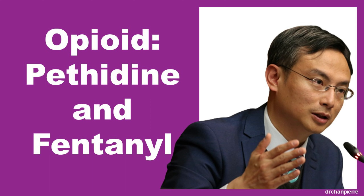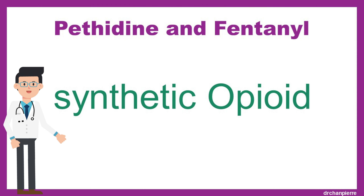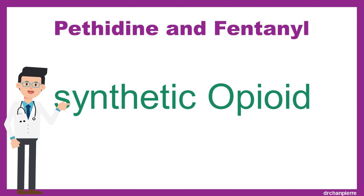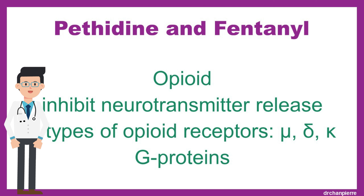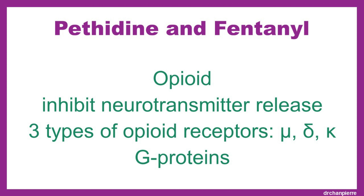Pethidine and fentanyl, which are synthetic compounds of opioids, provide both analgesia and sedation. The presynaptic action of opioids to inhibit neurotransmitter release is considered to be their major effect in the nervous system. There are three types of opioid receptors: mu, delta, and kappa, coupling to intracellular mechanisms by G proteins.